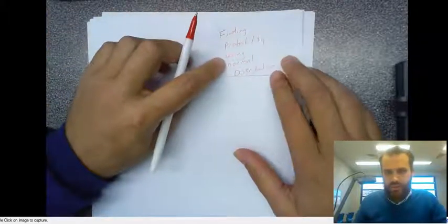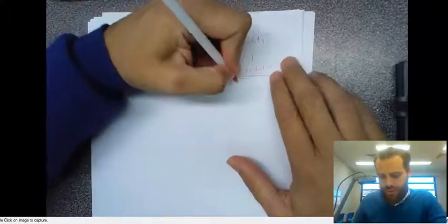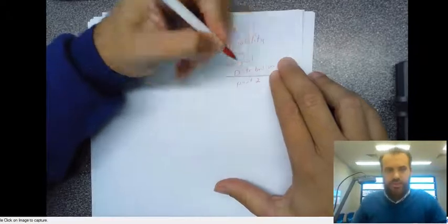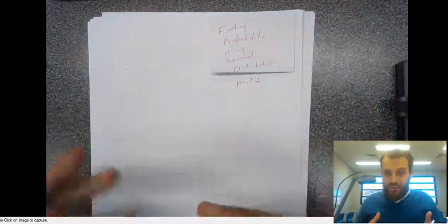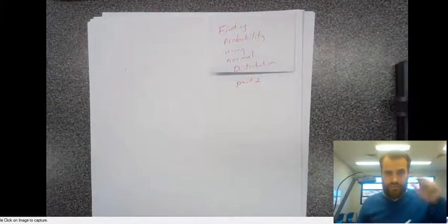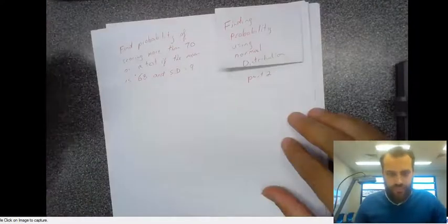We're doing finding probability using the normal distribution. This is part two. This is going to be a slightly more difficult example, but only slightly. Let's see how it works.